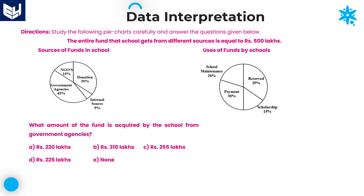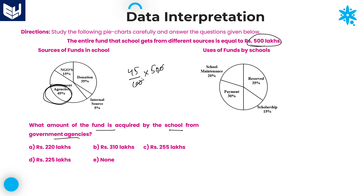Question five: what amount of fund is acquired by the school from government agencies? Government agencies is 45% of total 500 lakhs. Two zeros cancel: 45 × 5 = 225 lakhs. That is the total amount acquired by the school from government agencies — 225 lakhs. Option D is the right answer.